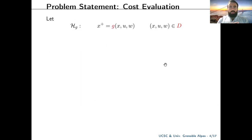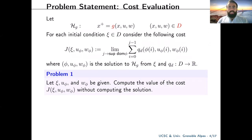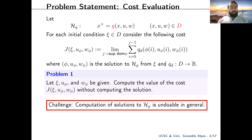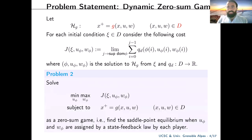Let's consider our difference equation HG and our cost functional J in terms of a stage cost QD. The solution Phi(u, w) is the solution to our discrete system HG from our initial condition. The first problem we want to solve is: given initial condition and input actions, we want to compute the value of the cost without computing the solution. Solutions cannot be computed in general, so we build up a Lyapunov-like approach to avoid it.